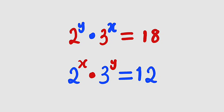Hello, good dear viewers. In this tutorial, we are going to find a solution to this system of equations. We have 2 raised to the power of y multiplied by 3 to the power of x equal to 18. And the second equation is 2 to the power of x multiplied by 3 to the power of y equal to 12. We are only looking for the real values of x and y that satisfy the two equations.